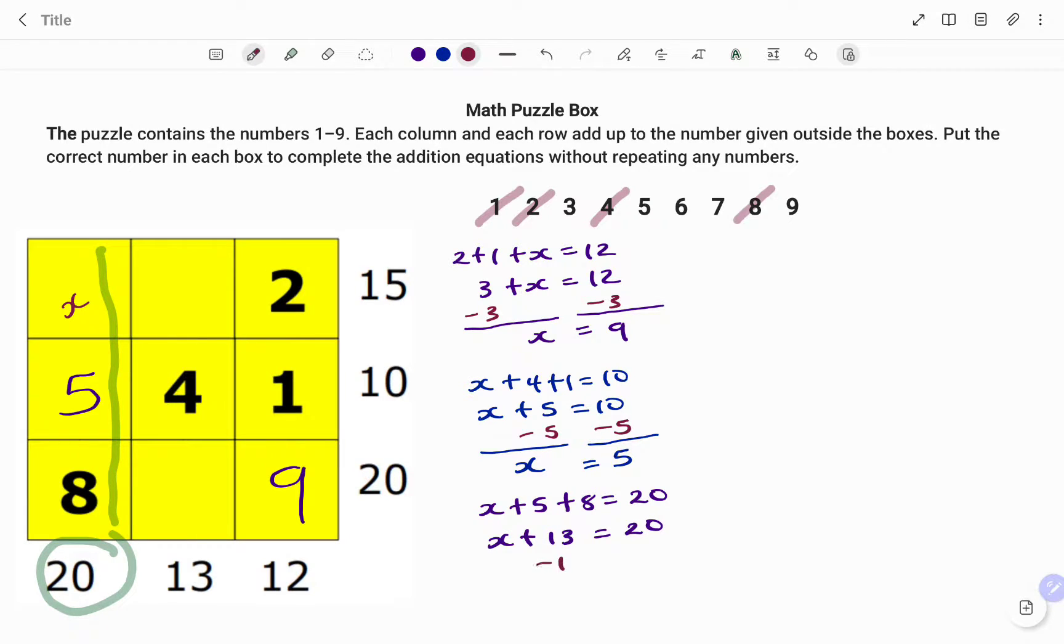Taking out 13 from both sides using the balance method, I'm left with x plus 0. So x equals 20 minus 13, that's 7. So my missing variable is 7.